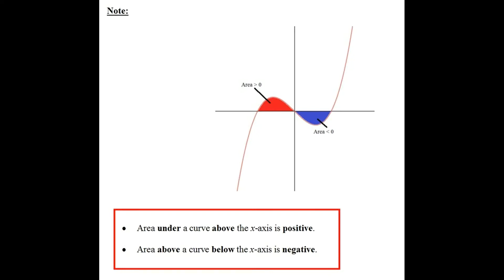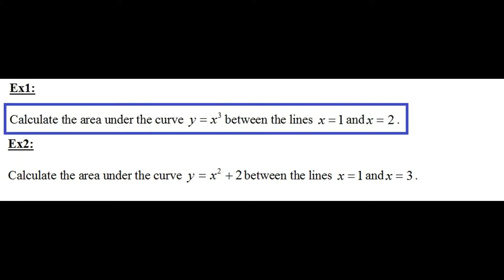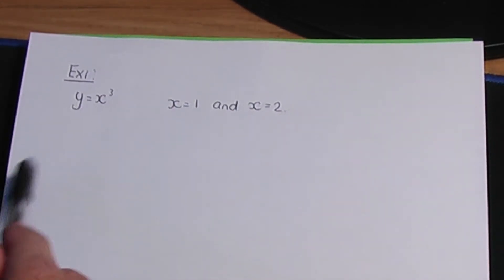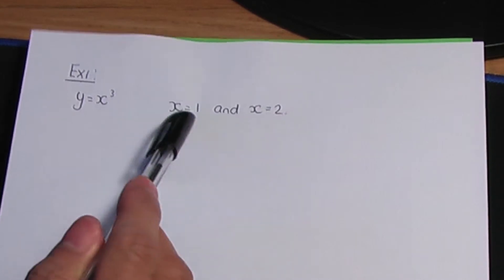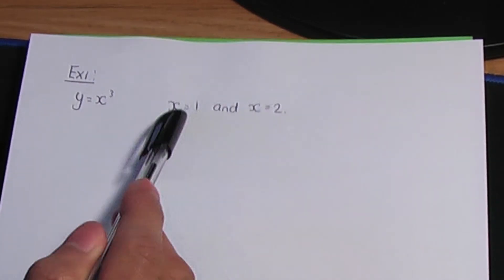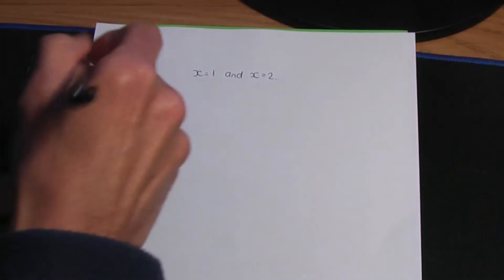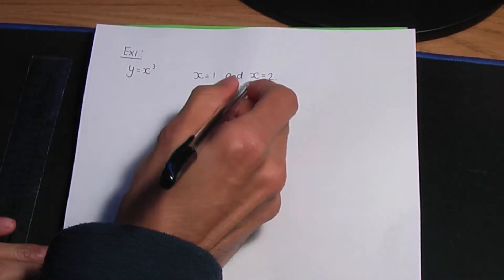Now, over to example 1. The question reads: calculate the area under the curve y equals x cubed between the lines x equals 1 and x equals 2. So back to the paper and pen. Here's the equation of the curve y equals x cubed, and we need to integrate that between the x values 1 and 2. So 1 and 2 will be the limits of our integral. As we're integrating with respect to x, we need to use the x values as our limits.